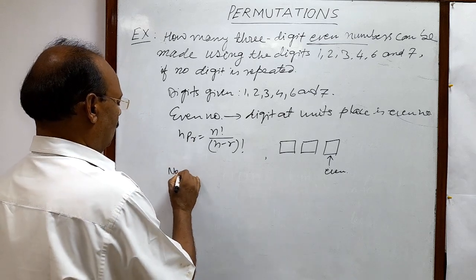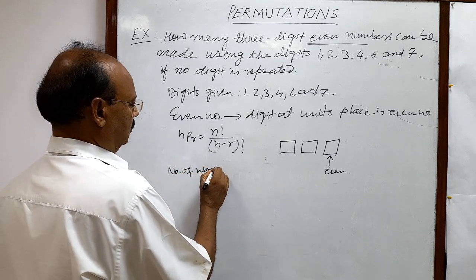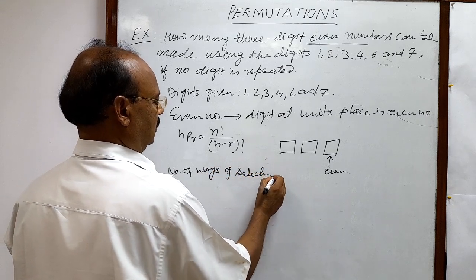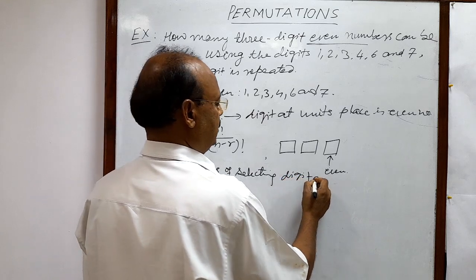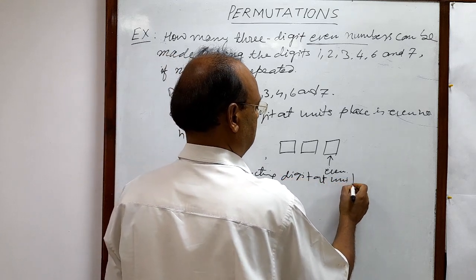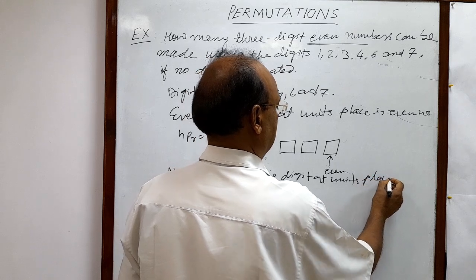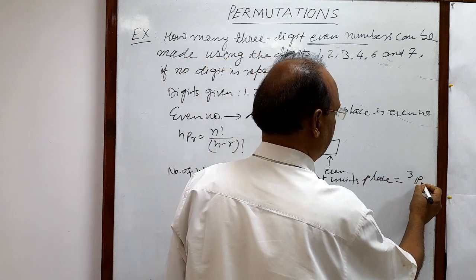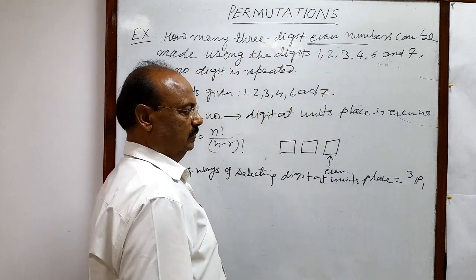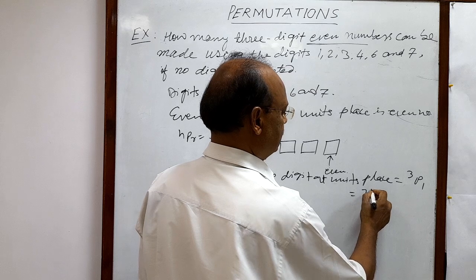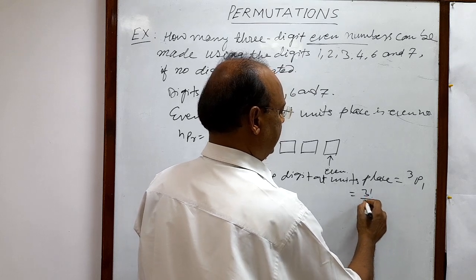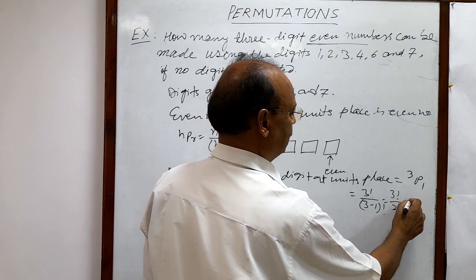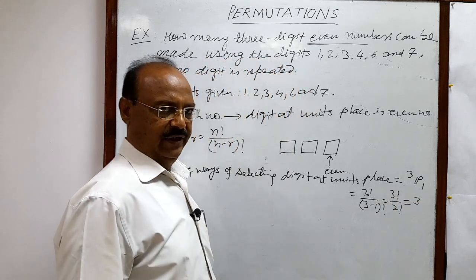So number of ways of selecting digit at units place, how much? 3P1 and let us calculate it. 3P1 means 3 factorial by 3 minus 1 factorial. 3 factorial by 2 factorial, this is equal to 3.